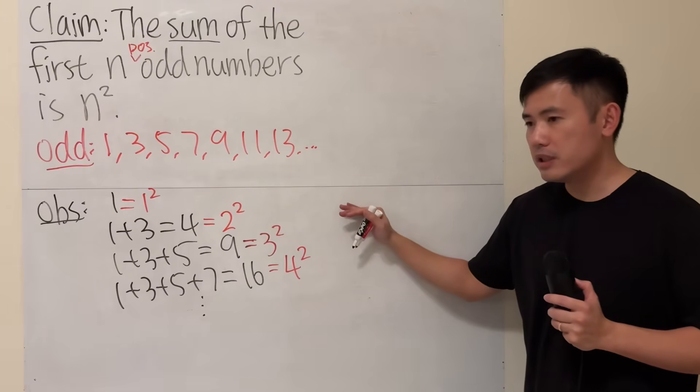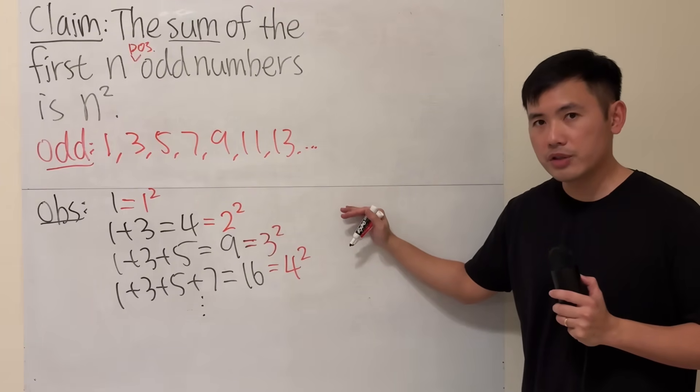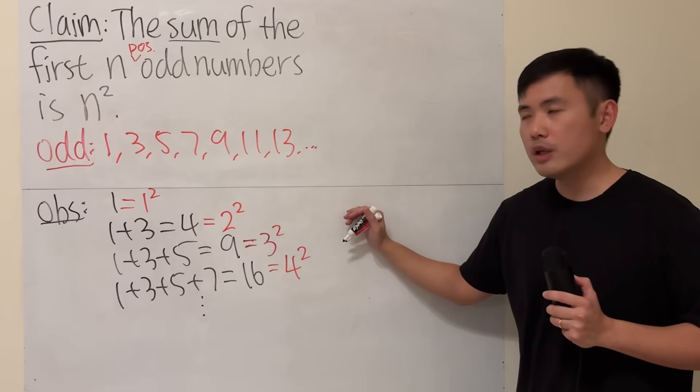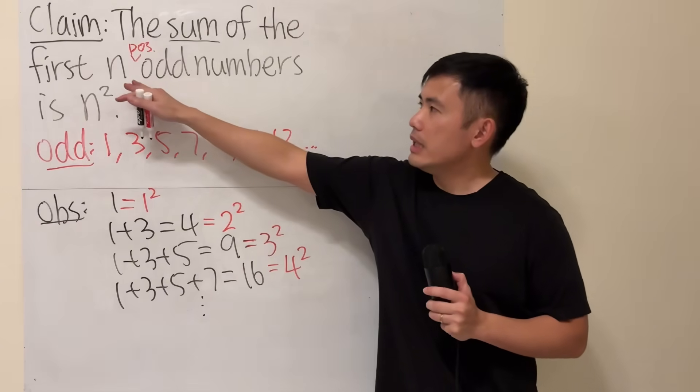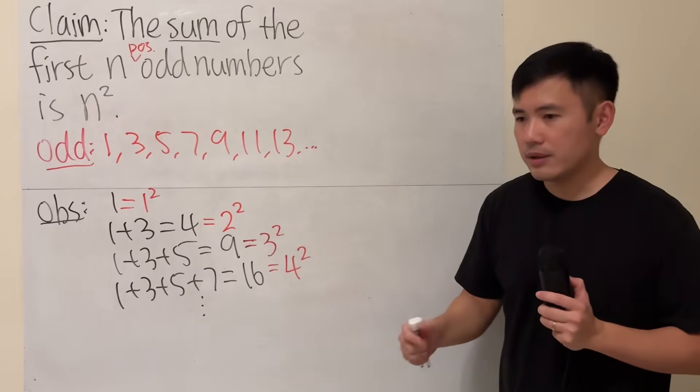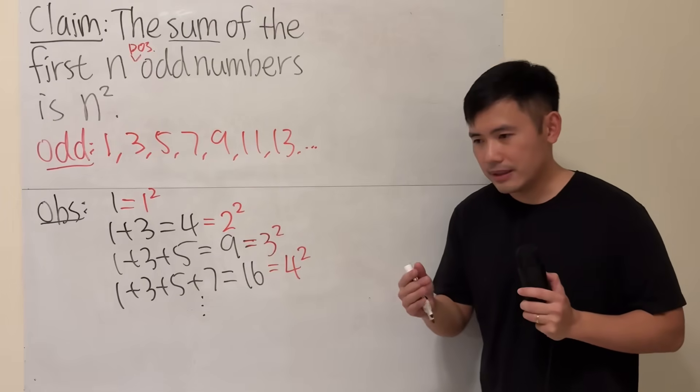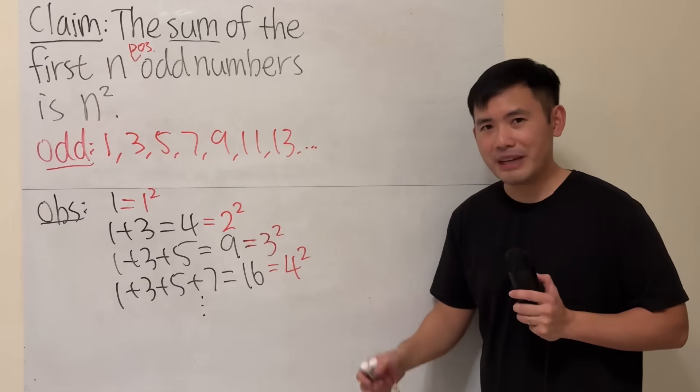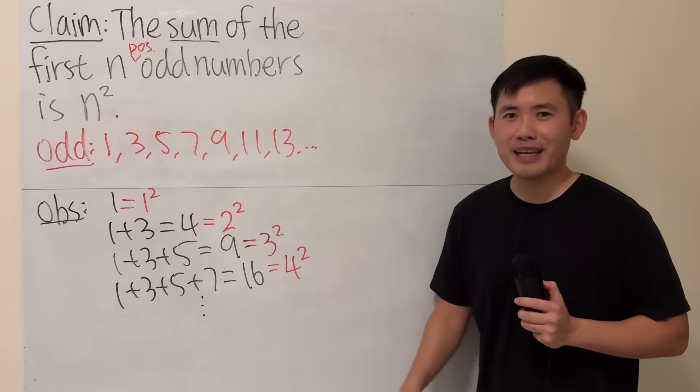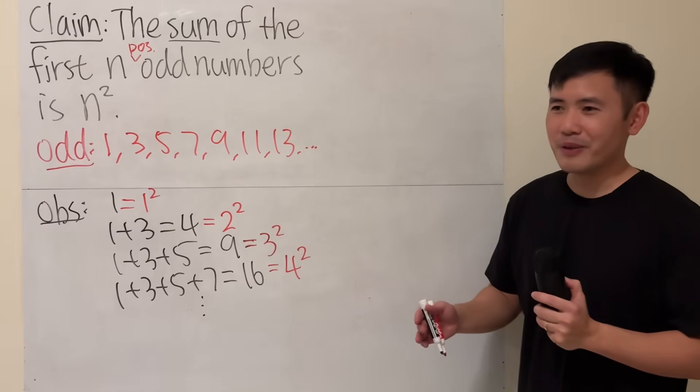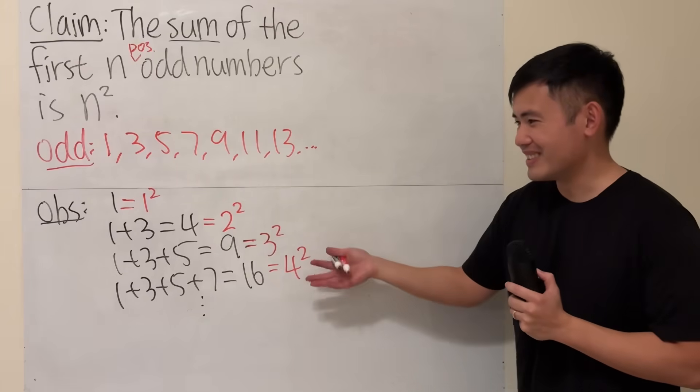And the typical way to prove this is called the mathematical induction. Whenever you are dealing with the first n things, first couple, first whole numbers, you should do mathematical induction. I'm going to skip that because I want to make this video fun for kids, just like the post said.